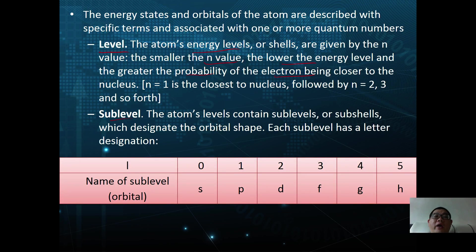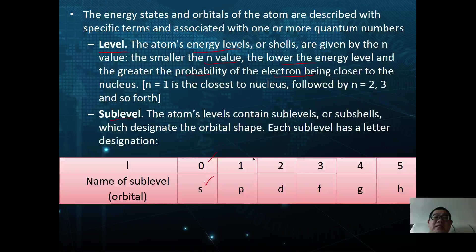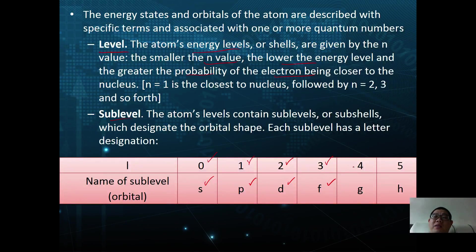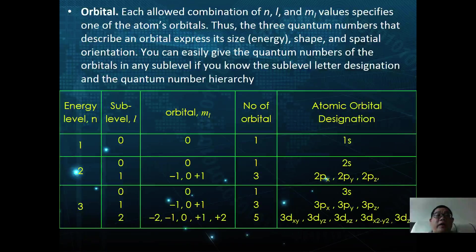When l equals 0, we represent it by the s orbital. When l equals 1, we represent it by the p orbital. When l equals 2, we represent it by the d orbital. When l equals 3, we represent it by the f orbital, and so forth.